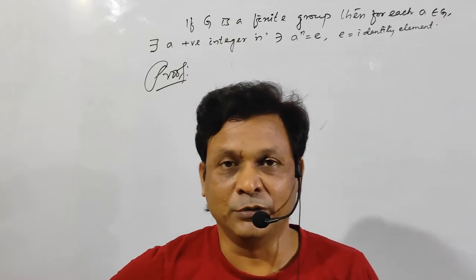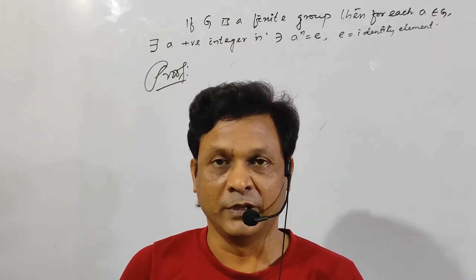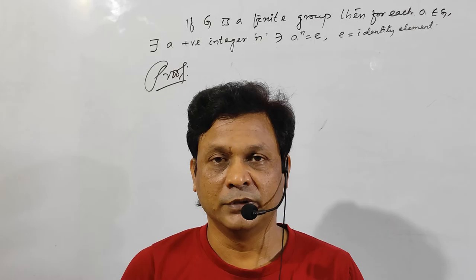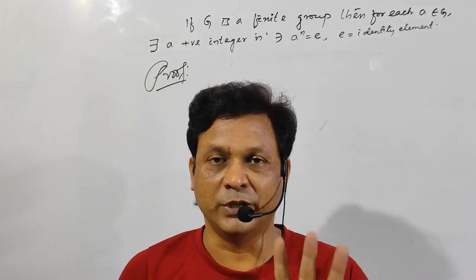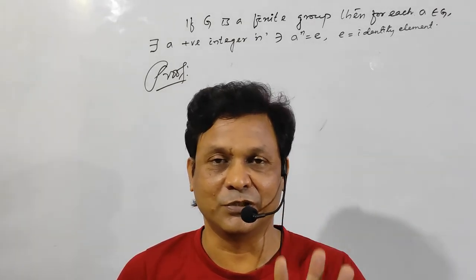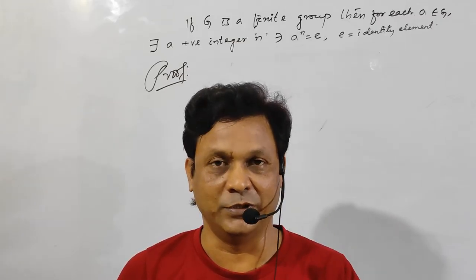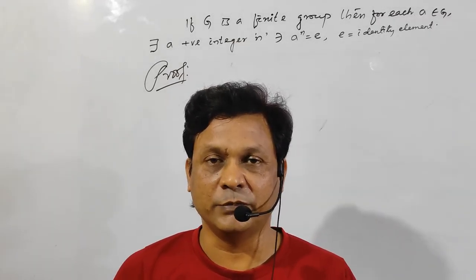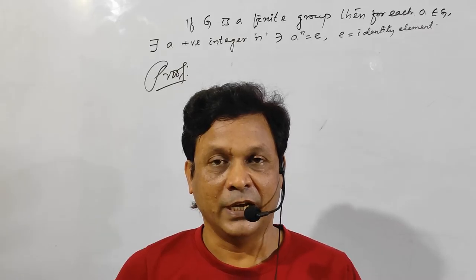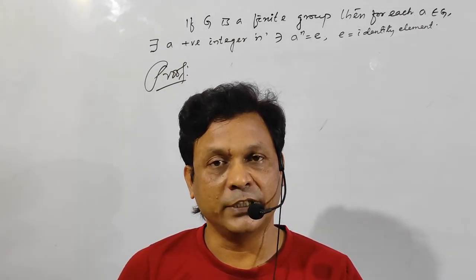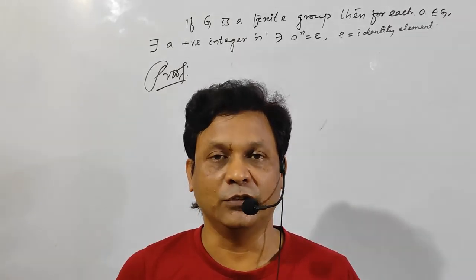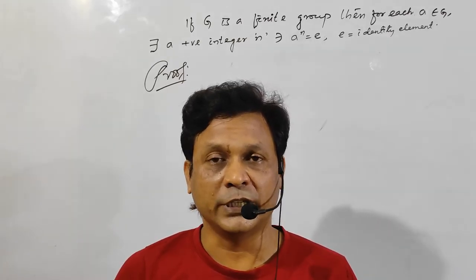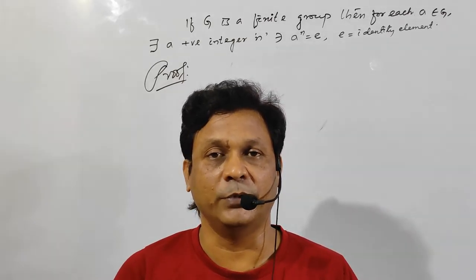Hello everybody, today I am going to tell you about group theory. A set G is said to be a group if it satisfies four axioms: first is the closure axiom, then associative, then identity, then inverse. And if it satisfies these four axioms that is called a group. If it also satisfies the commutative axiom, then the group is said to be an abelian group.